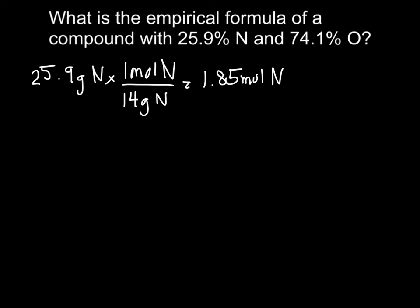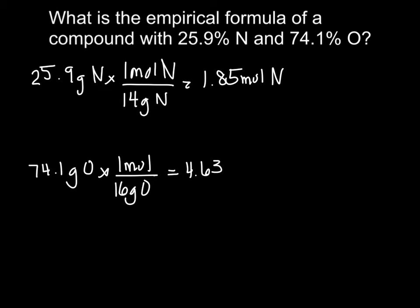For oxygen, I take 74.1 grams and divide by the atomic mass of oxygen, which is 16 grams. 74.1 divided by 16 is 4.63 moles of oxygen. Now I determine which is the lowest number: 1.85 and 4.63. The smaller is 1.85, so I divide both answers by 1.85, getting 1 and 2.5.